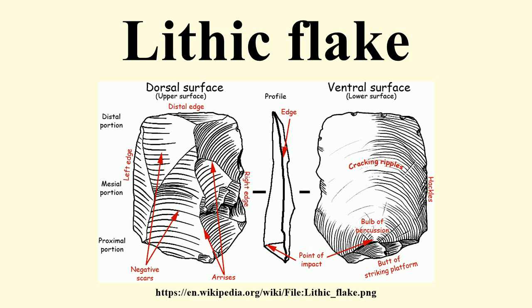On most natural cobbles or nodules of source material, a weathered outer rind called a cortex covers the unweathered inner material. Flakes are often differentiated by the amount of cortex present on their dorsal surfaces, because the amount of cortex indicates when in the sequence of reduction the flake came from. Primary flakes are those whose dorsal surfaces are entirely covered with cortex. Secondary flakes have at least a trace of cortex on the dorsal surface.